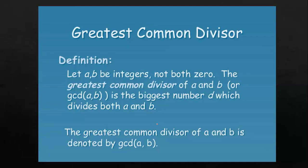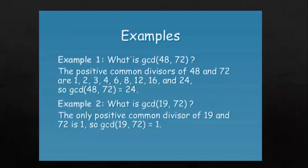The next concept is Greatest Common Divisor. Its definition: let a and b be integers, not both zero. The Greatest Common Divisor of a and b, abbreviated GCD(a, b), is the largest number d which divides both a and b. The GCD is the biggest number that divides both a and b, and we denote it in this notation: GCD(a, b). Let's move towards the example of GCD. What is the GCD of 48 and 72? The positive common divisors of 48 and 72 are 1, 2, 3, 4, 6, 8, 12, and 24.